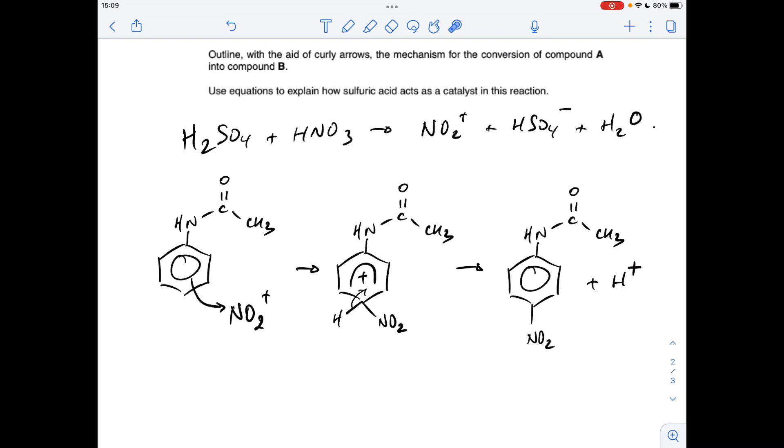So basically we've just got to get it back. So we take the HSO4- ion created in the first reaction, combine it with the H+ that's just come off the benzene ring, and that gives you your H2SO4 back.